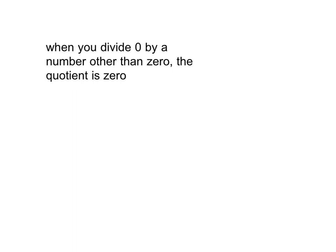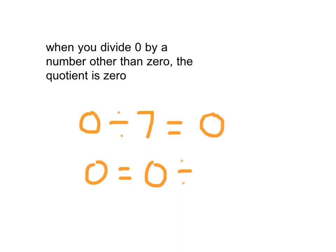There's that division rule for you. Go ahead and copy that down next to the equation you had written. Dividing 0 by any number other than 0 — because remember, you can't divide by 0. 0 divided by 7 is 0. 0 is equal to 0 divided by anything, like 9. When you divide 0 by a number other than 0, the quotient is 0.